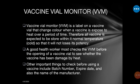After checking the VVM, you need to check the expiry date so as not to inoculate a baby with an expired vaccine. You also check the batch number, because there are some problems that can arise and it is through the batch number that they can be traced. You must also know the manufacturer name.